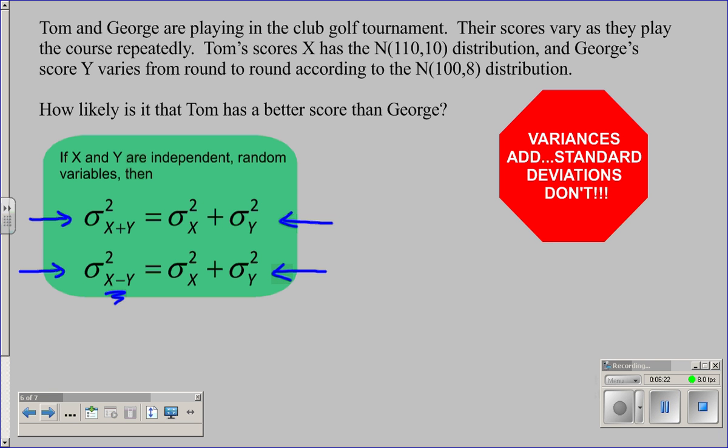The big idea here is that variances add, standard deviations don't. If we're combining distributions, we want to add their variances. So if I want to find the variance of X minus Y, I will take the two variances from the problem. Tom's standard deviation was 10, we square that to get his variance, plus George's which is 8, we'll square that. That will come out as 164. That's the combined variance.